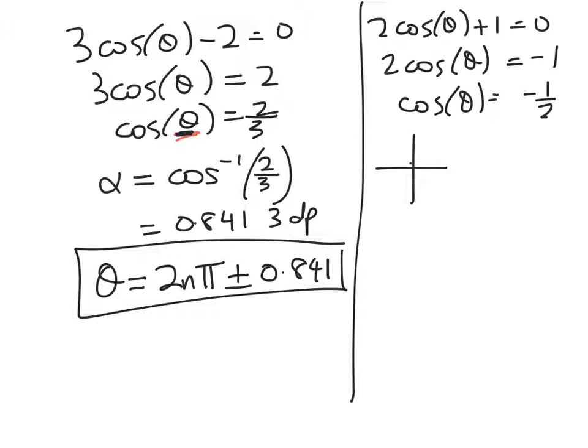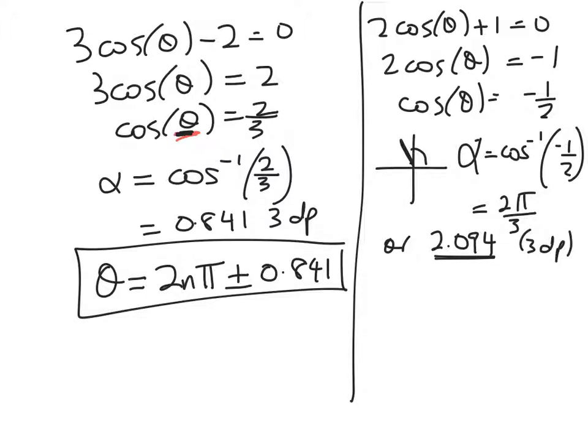So thinking about special triangles and so on, I'm going to get that α, my principal value, is the angle whose cosine is -1/2, which is 2π/3. But I know that some of you will be doing it on your calculator and you weren't asked for exact values, so you can get away with 2.094 to 3 decimal places. So that gives me the general solution here of θ = 2nπ ± 2π/3.